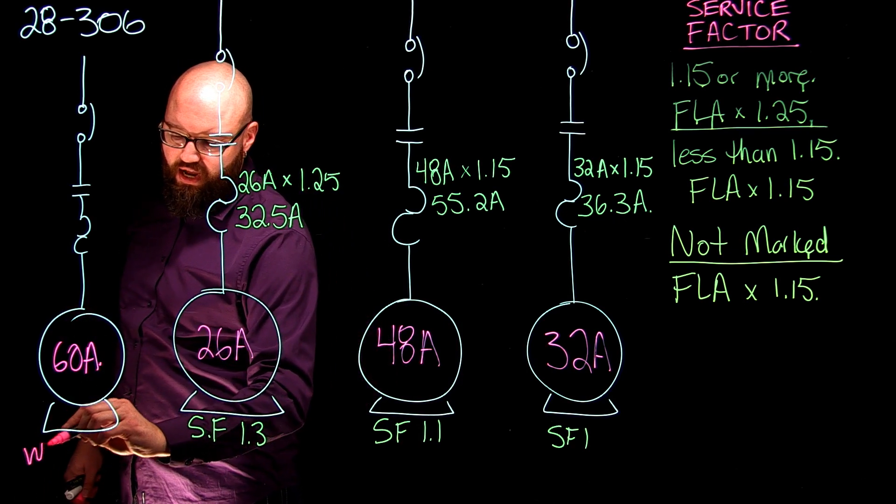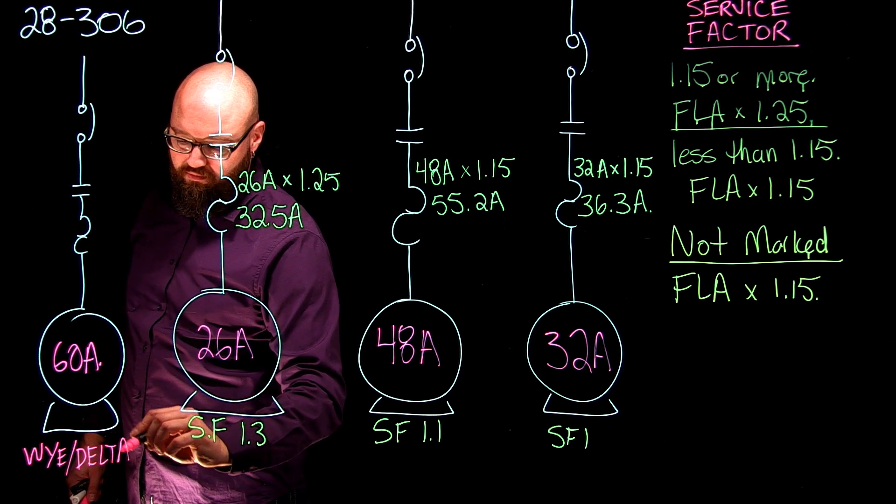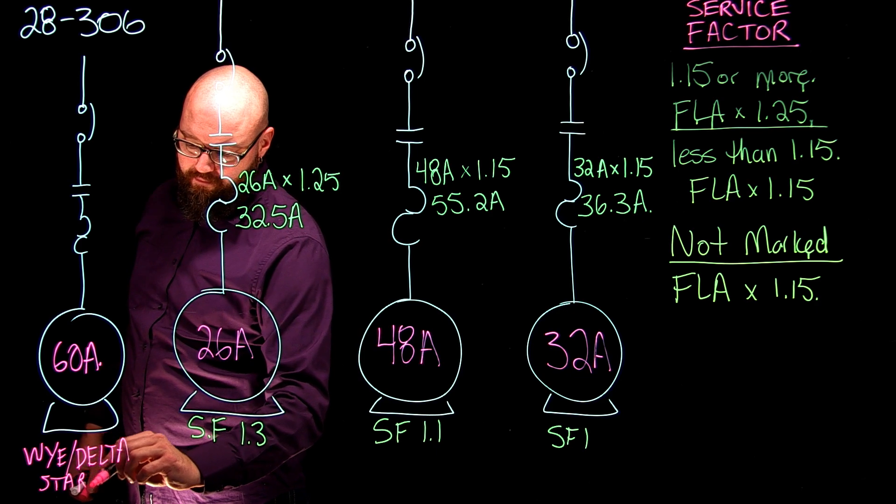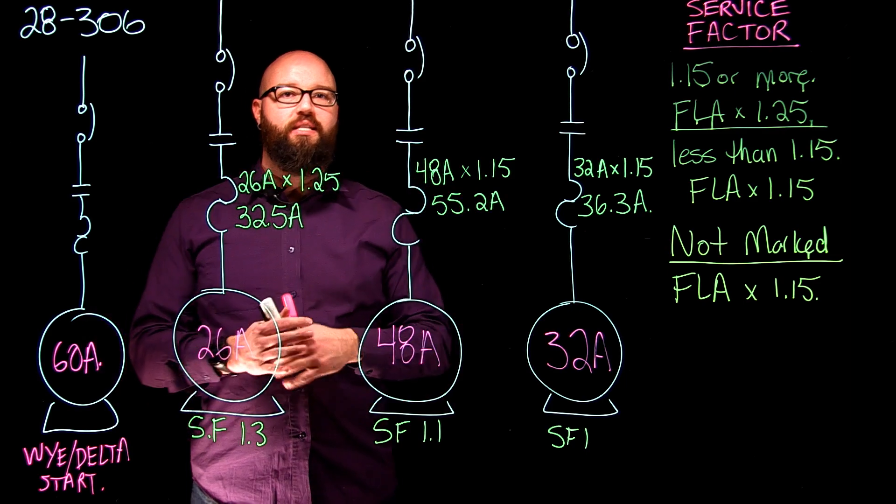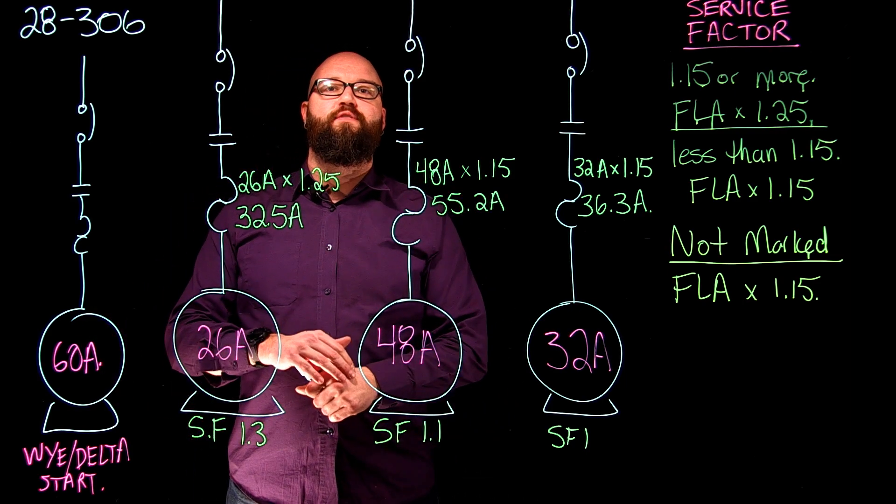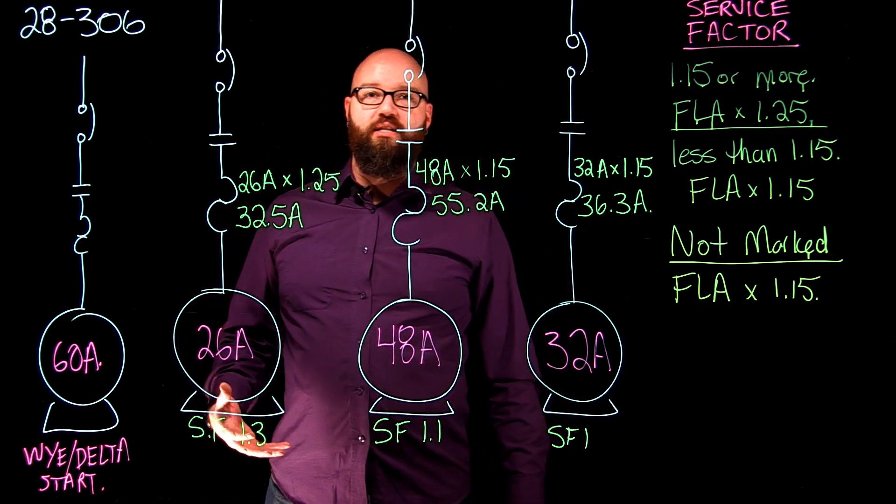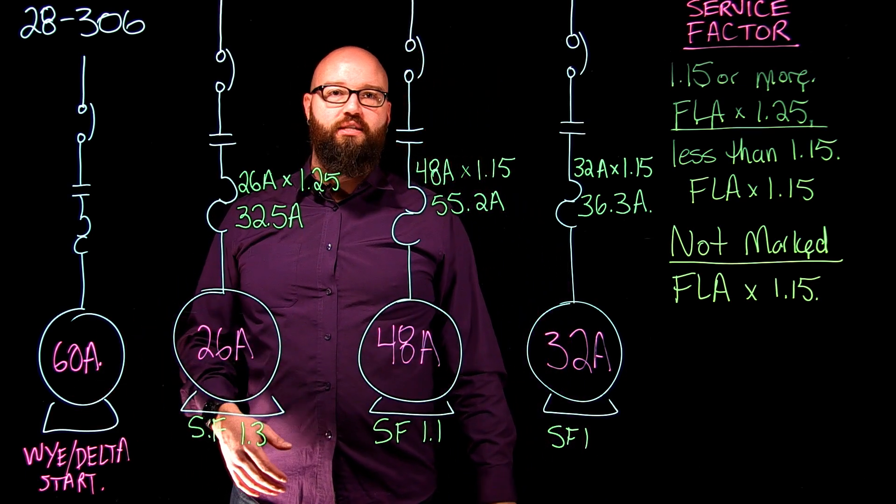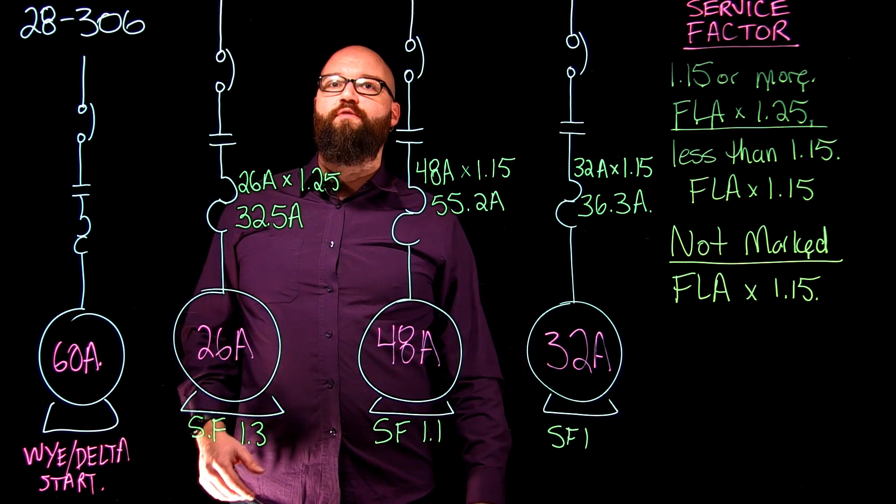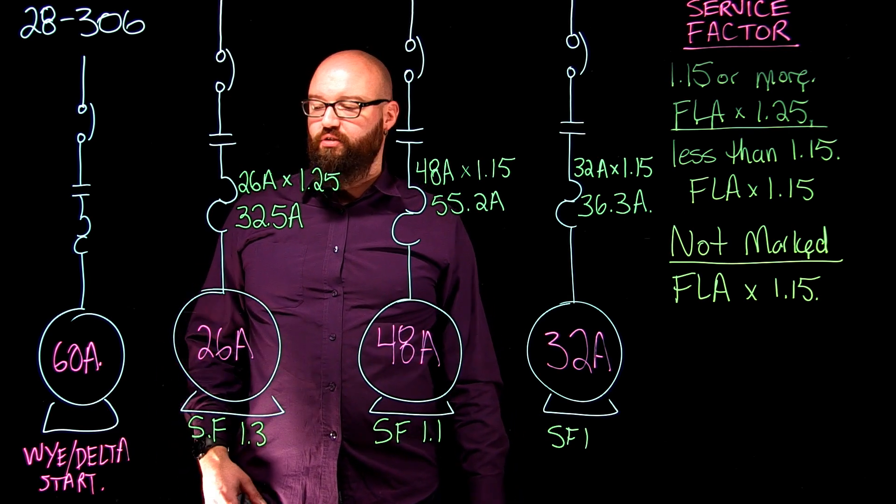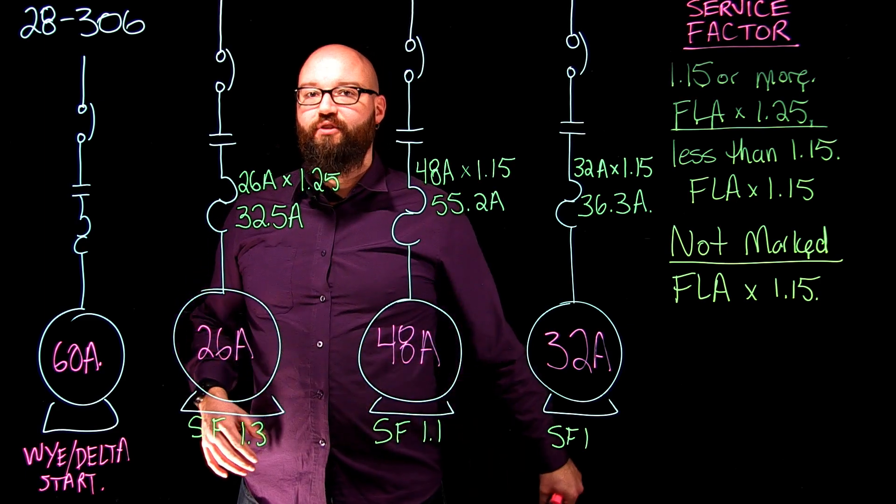We are going to put an FLA on this one of 60 amps. But this motor is a little bit more specific. We're going to say that this is a Y-delta start, which means that our motor is going to start in a Y configuration and then once it gets up to a certain speed or a certain duration of time has passed, it's actually going to switch into a delta configuration. It's going to run in delta. So it starts in Y and it runs in delta. What that means for us when we're sizing the overloads is the actual overloads are located within the phases, so we're going to size those based off of the phase current of this motor.